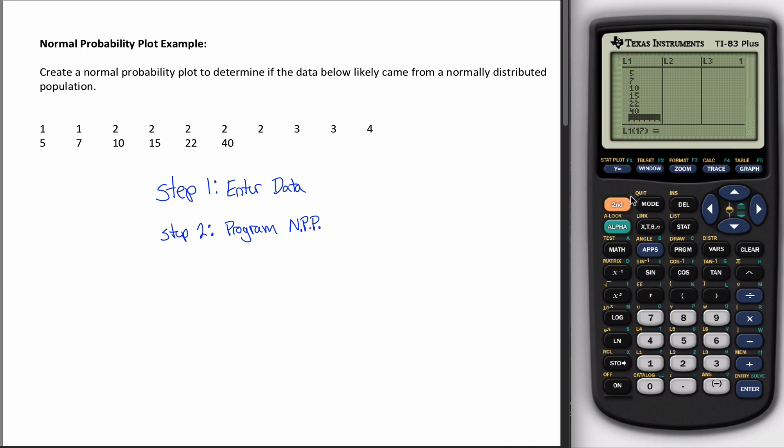So you got to tell your calculator you want a normal probability plot. Normal probability plots live where the rest of your statistical plots live, conveniently under the stat plot menu.